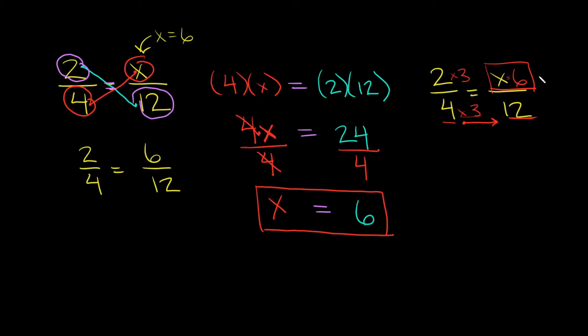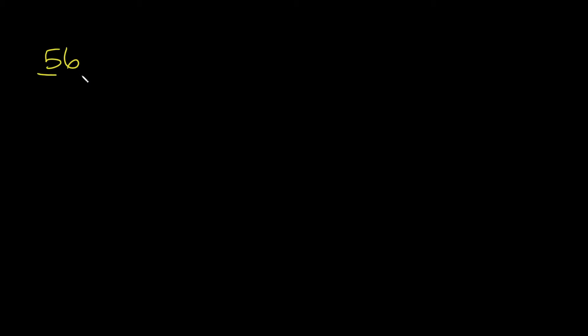As you can see, we got the same answer with both methods. Those are your two methods. Let's do one more example: 56 over y is equal to 7 over 5.